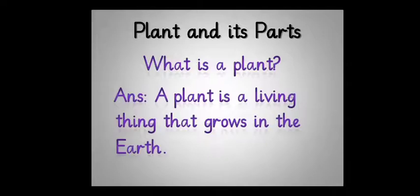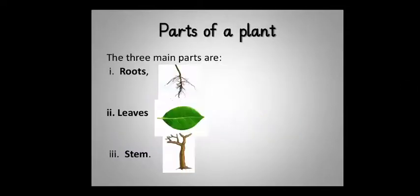What is a plant? A plant is a living thing that grows in the earth. Now the parts of a plant. The three main parts are roots, leaves, stem.